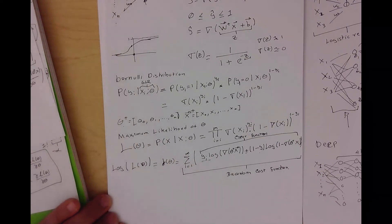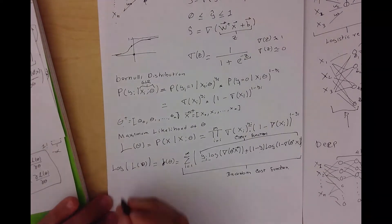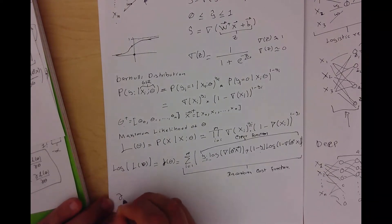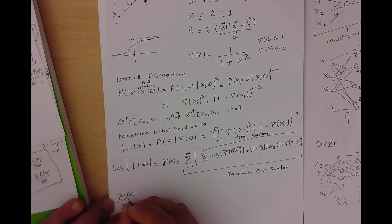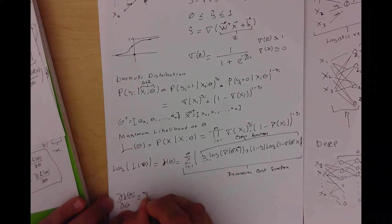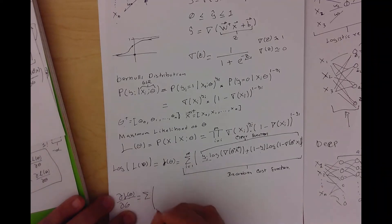We take the derivative of the Jacobian cost function. We don't care about what's inside the summation for the derivative — the logarithm of the input times y gives us what we need.